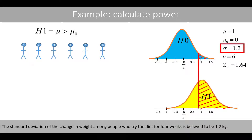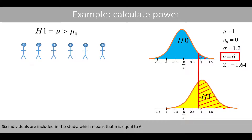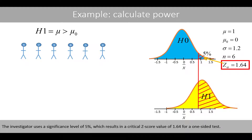The standard deviation of the change in weight among people who tried the diet for four weeks is believed to be 1.2 kilos. Six individuals are included in the study, which means that n is equal to six. The investigator uses a significance level of five percent, which results in a critical z-score value of 1.64 for a one-sided test.